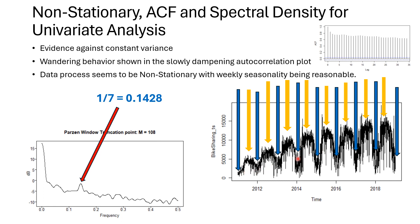We can see that a weekly seasonal pattern may be present. When we compute 1 divided by 7, we get 0.1428, and this matches around the frequency in the spectral density plot, indicating that a weekly seasonal pattern or factor would be reasonable.